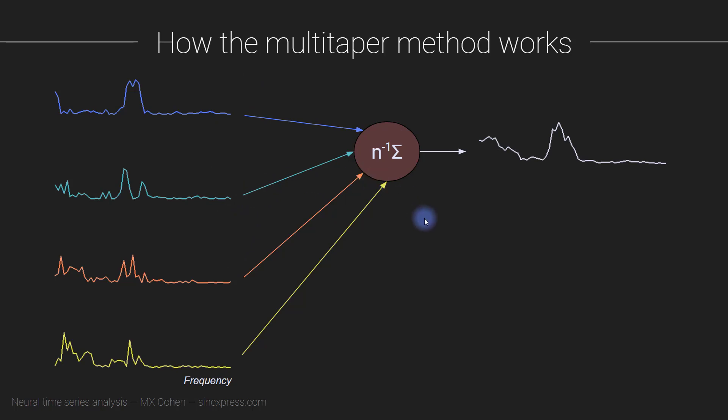And you can contrast this with a normal Fourier transform, which would look like this. So this is just the power spectrum from a regular Fourier transform of the same data snippet. So this spectrum and this spectrum come from exactly the same data. These have been pushed through the multi taper method. And this is just one FFT.